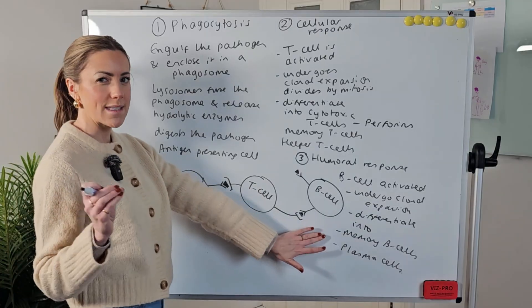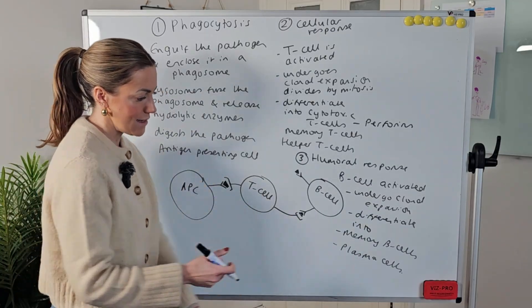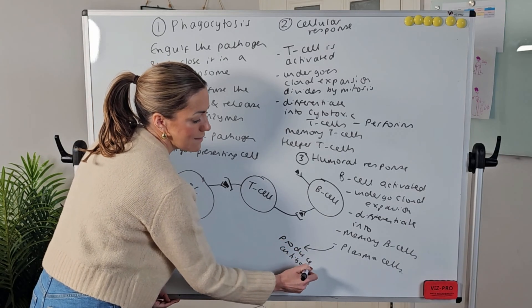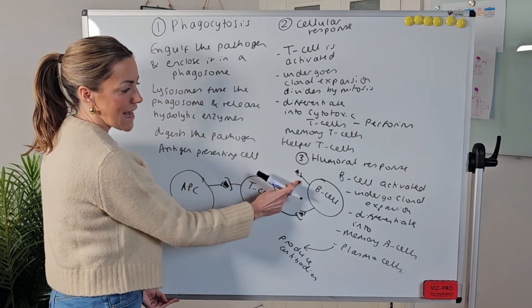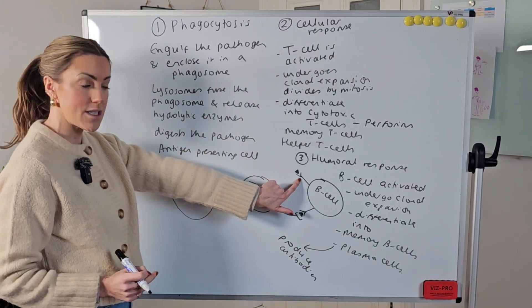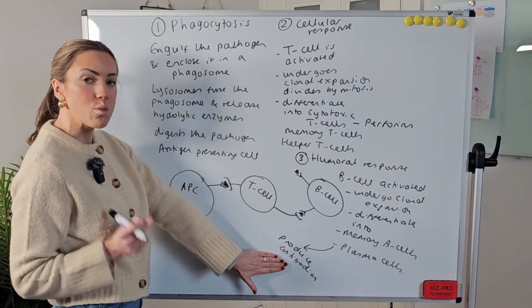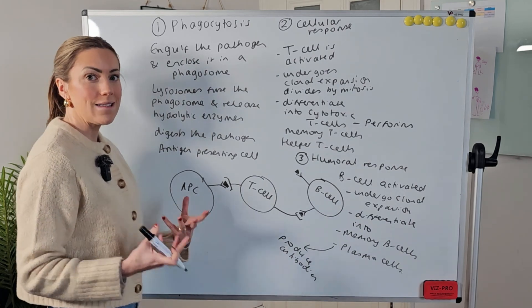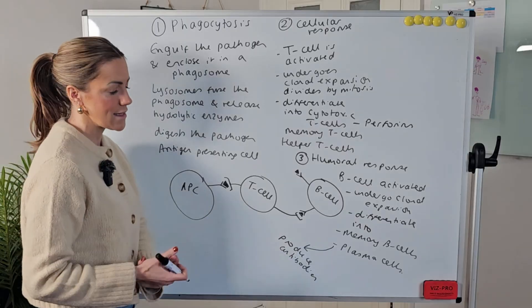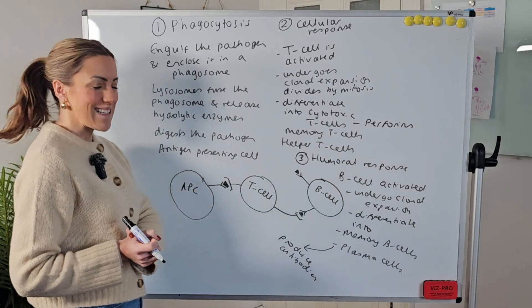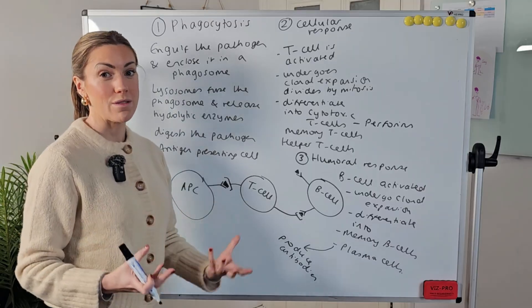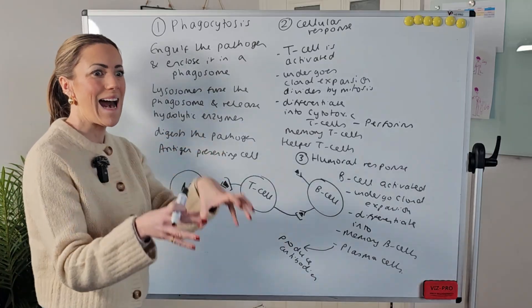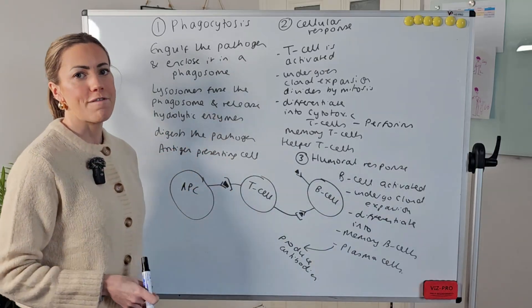The plasma cells really important they produce antibodies and the antibodies they produce are the same as the antibodies that were acting as receptors on the cell surface membrane. So those antibodies will be complementary to the same foreign antigen, they'll be able to bind to it using their antigen binding sites and they'll be able to clump pathogens together in the process that we call agglutination. They'll be able to act as opsonins or markers to almost tag the pathogens to attract more phagocytes over.